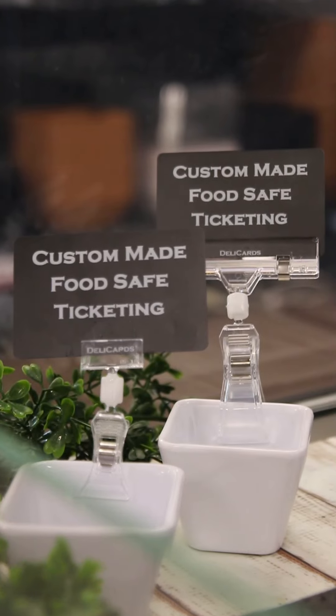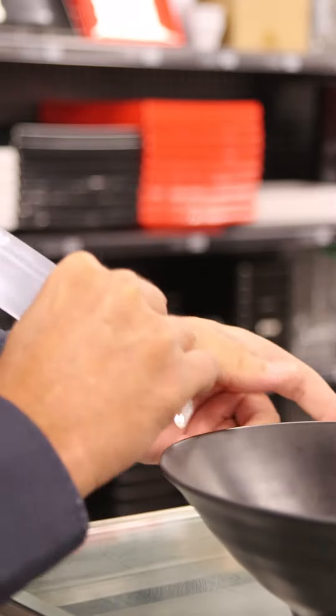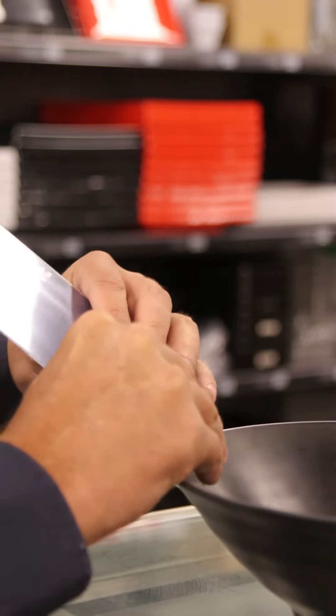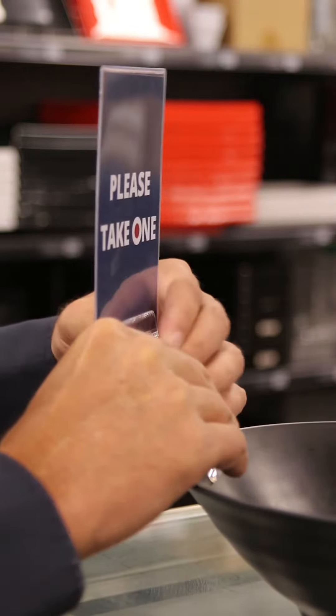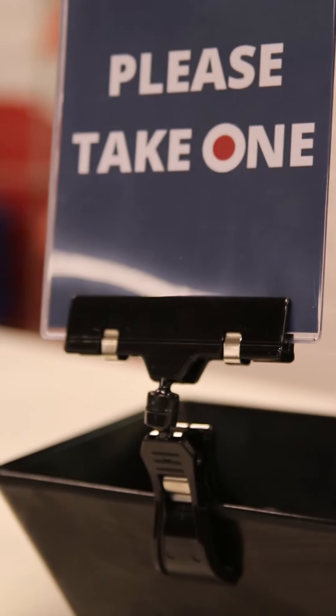Another variation is for a very large ticket, this very strong gripper off the top here. Quite popular in delis with big tickets for cheeses and what not. Very simple to use, these ones are really good, very popular product.